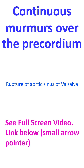Rupture of aortic sinus of Valsalva into right-sided cardiac chambers is another cause of continuous murmur. The classical form of RSOV into the right ventricle has a murmur with diastolic augmentation. This contrasts with the peaking of the PDA murmur around the second heart sound. Diastolic augmentation of the RSOV to RV murmur occurs because the tract from the aorta, usually passing through the right ventricular outflow tract, gets compressed by muscle contraction in systole. If the RSOV is into the left ventricle, it can present with a diastolic murmur, but that is quite rare.